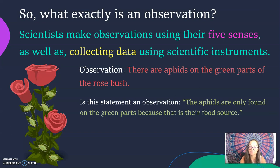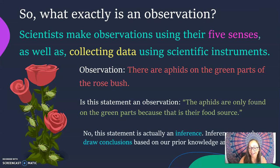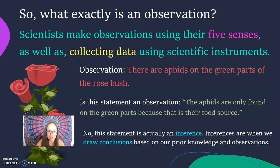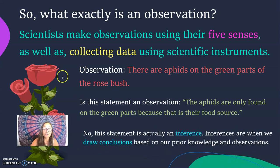Now is this statement an observation: the aphids are only found on the green parts because that's their food source? The first part actually is an observation: the aphids are only found on the green parts. But now we've turned it by adding this part, because that is their food source. You're making kind of like an inference. An inference is when we draw conclusions based on our prior knowledge and our observations.